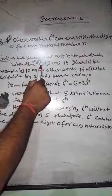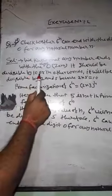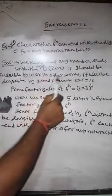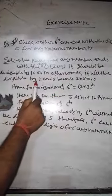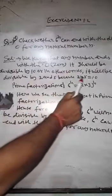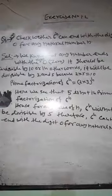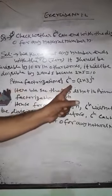Solution: We know that any number ending with digit 0 should be divisible by 10, or in other words, it will be divisible by 2 and 5 because 2 into 5 equals 10. So the prime factorization of 6 to the power n equals 2 into 3 to the power n.